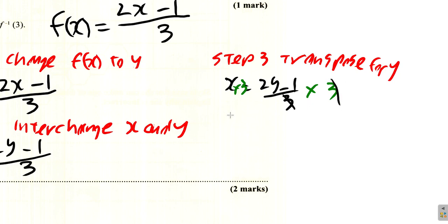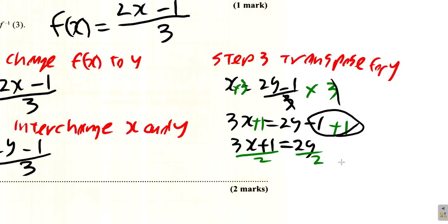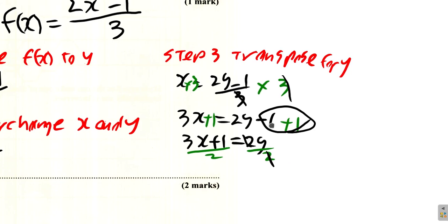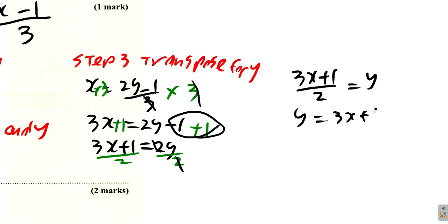After getting 3x + 1 = 2y, divide both sides by 2 to get y alone. The 2 cancels, giving y = (3x + 1)/2.